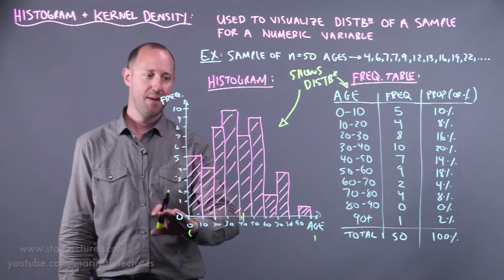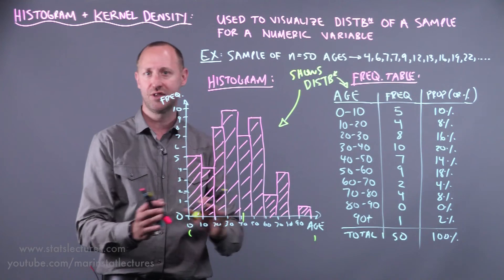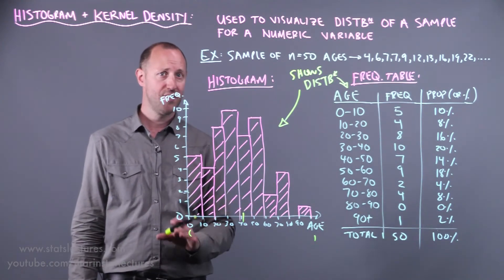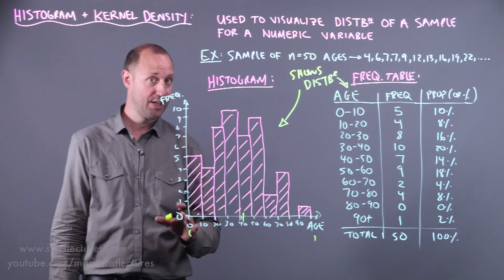It also tells us the shape of the distribution. Does it look fairly symmetric or does it look a little bit skewed in one direction? These are all things we'll tighten up the wording and definitions on soon.